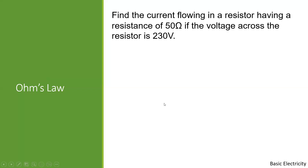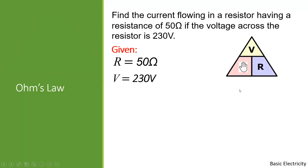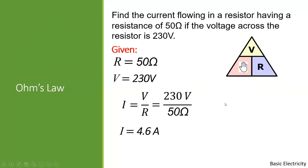Let's have some sample problems. Find the current flowing in a resistor having a resistance of 50 Ohms if the voltage across the resistor is 230 volts. Given: R = 50 Ohms, V = 230 volts. The missing part is current, so I = V / R = 230 / 50 = 4.6 Amperes.